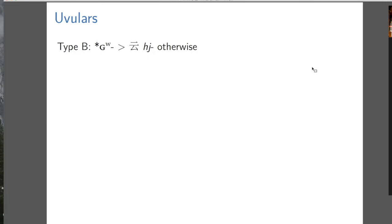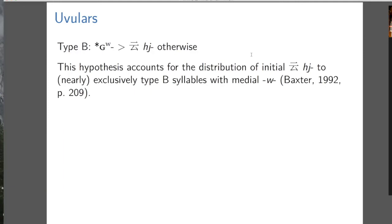There's a phonemic issue in Middle Chinese about whether this is seen as a separate initial or not, but we don't need to worry about that. Baxter and Sagart mechanically project this particular Middle Chinese initial back to a voiced labio-uvular stop. This is convenient in terms of the fact that this initial in Middle Chinese basically exclusively occurs in type B syllables with medial W — natural if it began life as what happens to a labio-uvular in type B syllables.